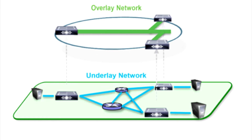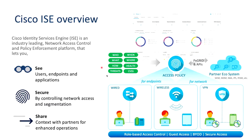The third component is centralized control. The heart of SD-Access is a central controller, often Cisco's Identity Services Engine (ISE). This controller serves as the policy engine, governing access policies network-wide. ISE focuses on authentication, authorization, and accounting (AAA) services. It supports features like 802.1x for secure access, posture assessment for compliance checks, and guest access services.